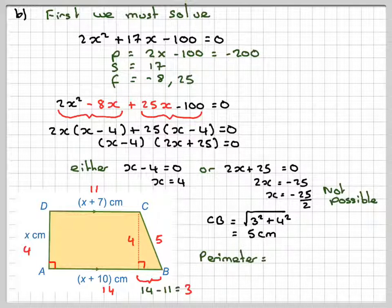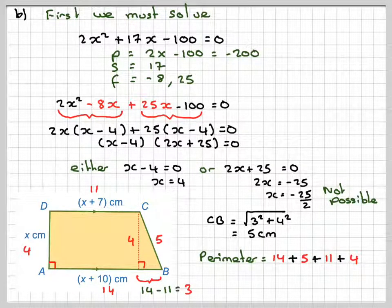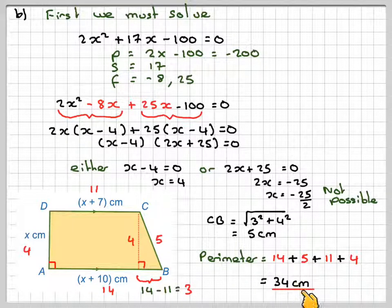So, the perimeter will be 14 plus 5 plus 11 plus 4. 14 plus 5 plus 11 plus 4 will make 34 centimetres.